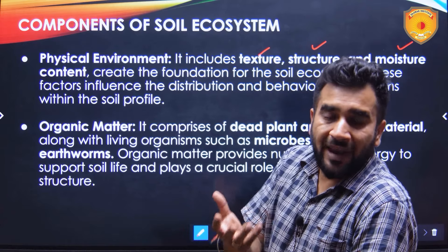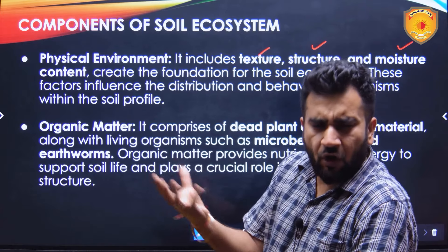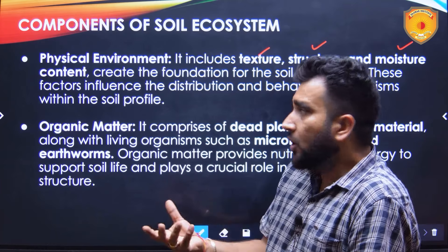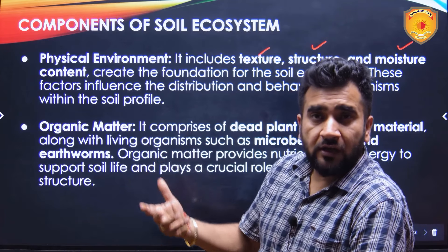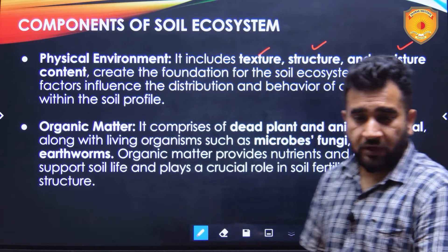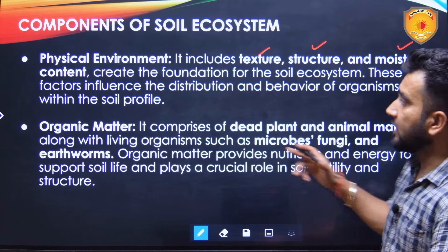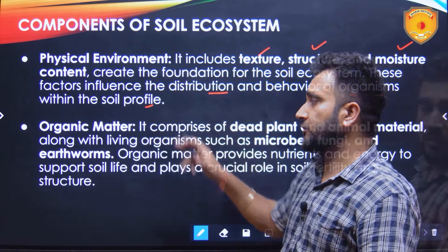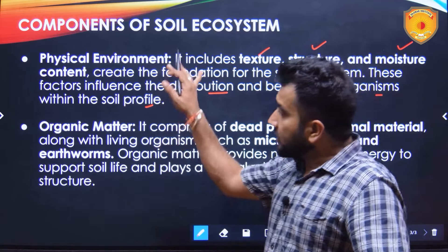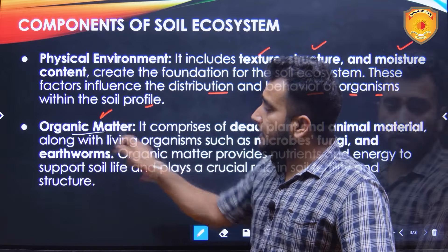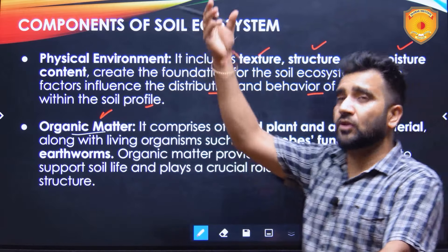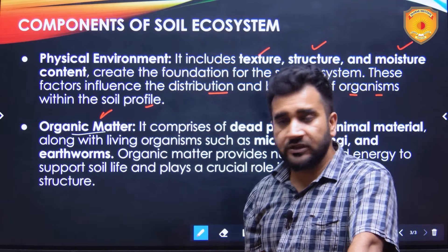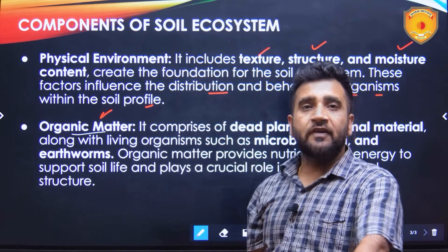Texture and structure refers to how densely or loosely packed the soil is, and what color it is — it can be red soil, black soil, alluvial soil, and so on. Depending on these features, the soil quality comes into picture. These factors include the distribution and behavior of organisms within the soil profile.